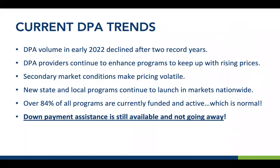As for the state of down payment assistance: DPA volume was at record levels in 2020 and 2021. It has declined a little in 2022 as home prices continue to appreciate and we now have interest rate volatility. However, all of these down payment assistance providers continue to aggressively try to enhance their programs — offering higher income limits, more assistance, higher purchase price limits, and more flexibility to keep up with rising prices and market volatility.